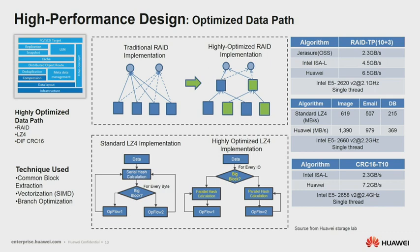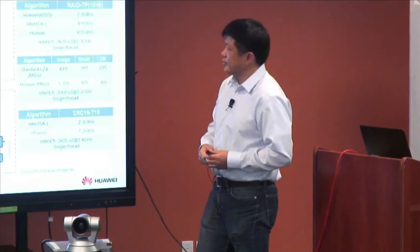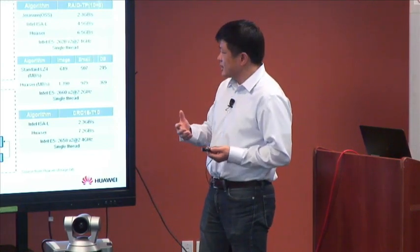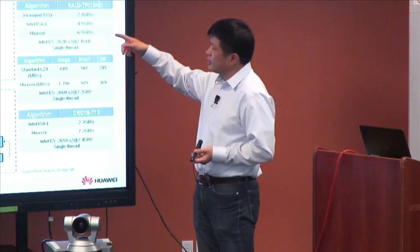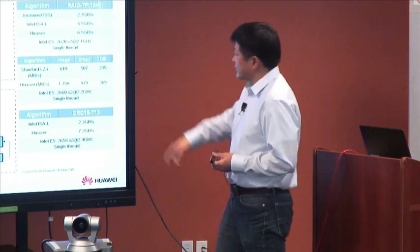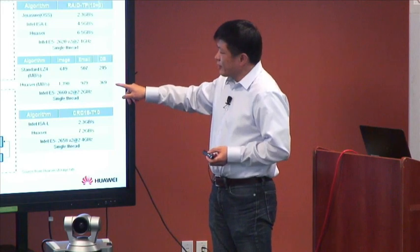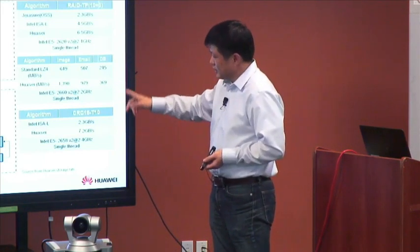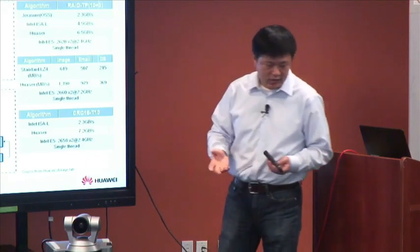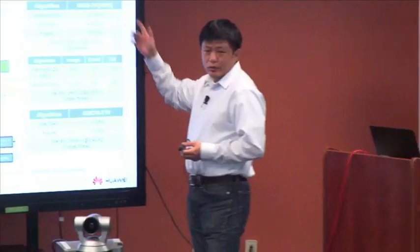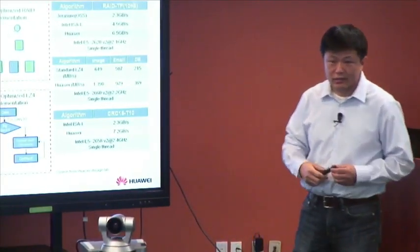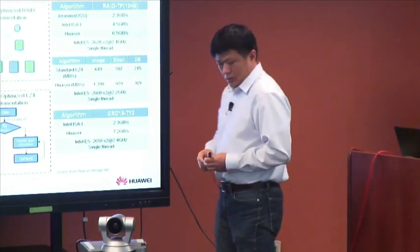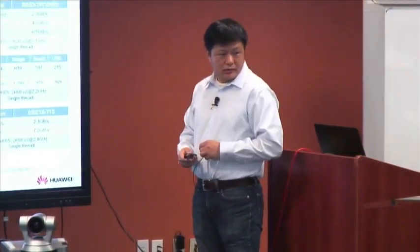We also have a highly optimized data path because the SSD is really fast. We have optimized data paths for read, for compression, and for diff. The technique we use extracts common blocks so we can save redundant computation. We do as much vectorization as we could to extract instruction-level parallelism. We also optimize our branches to exploit every possible CPU cycle. Compared to open source and other popular designs, we can achieve anywhere from 70% to 300% improvement. For example, RAID-TP 10+3, we get 6.5 gigabytes per second with one thread — about double the speed of popular designs. We also have a 3x improvement on the diff part.